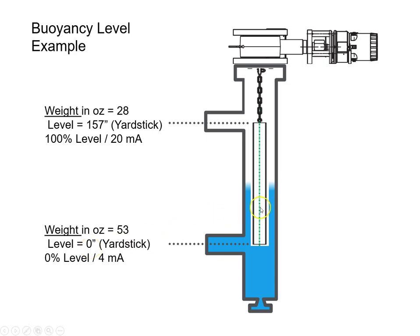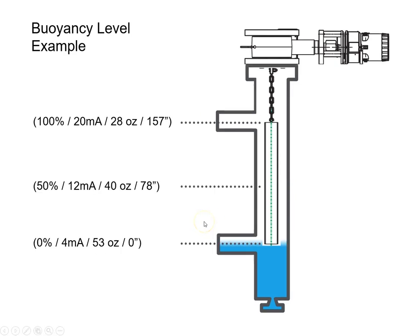By the way, the displacer isn't afloat — I've heard it called that before. The displacer remains stationary and it doesn't float. If you're thinking it's strange that the lower level has a heavier weight, you're not alone. It looks a little odd that we have 53 ounces at the lower level, but I'll explain it. It's heavy because when you look at the displacer, it's hanging in air — there actually is no level; we're at 0% or 0 inches. The liquid is just below the displacer, so since there's no buoyant force to make the displacer feel lighter, it's hanging in air and it appears to the instrument to be at its heaviest: 53 ounces.